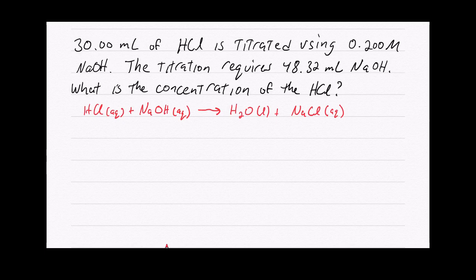If we want to look at the net ionic reaction here, that would be H⁺ plus OH⁻ gives us H2O. One of the things that we know is that at neutralization, the number of moles of H⁺ have to equal the number of moles of OH⁻.